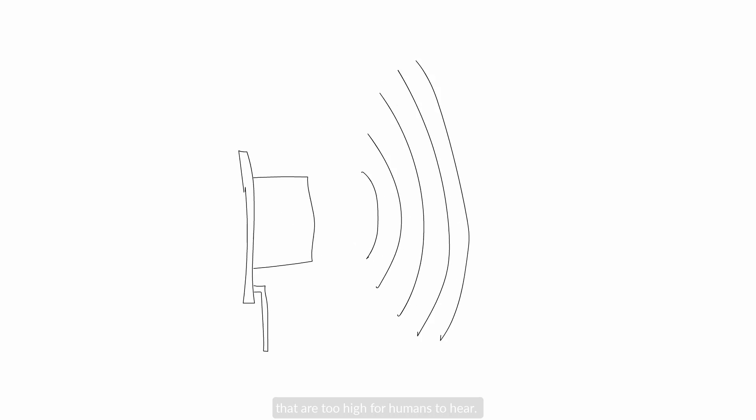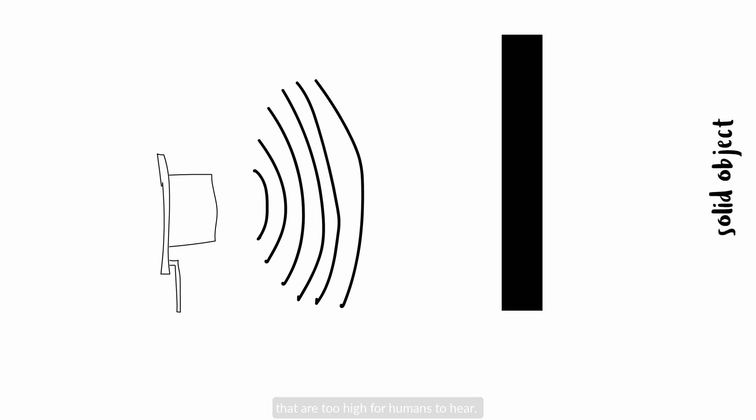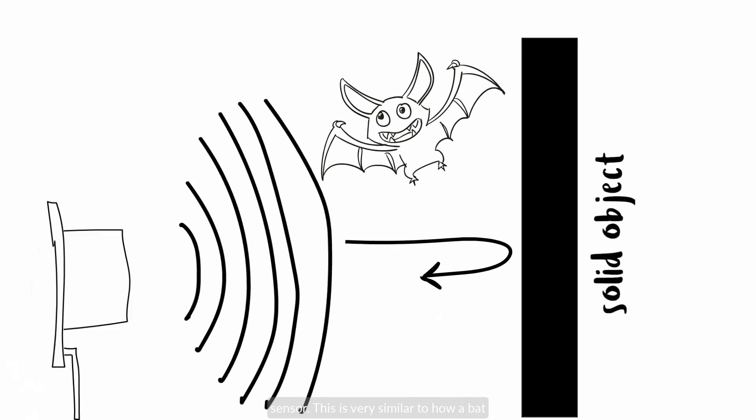The sensors are called ultrasonic because they emit a rapid series of clicks that are too high for humans to hear. The noise bounces off an object in front of the sensor and echoes back to the sensor. This is very similar to how a bat navigates as it flies.